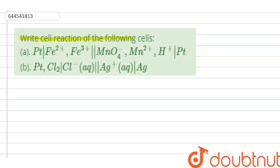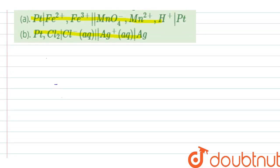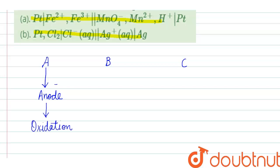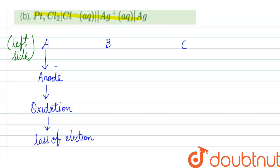Our first reaction and second reaction. First of all, students, a cell reaction has three parts: A, B, and C. A is for anode. Anode means oxidation. Oxidation means loss of electrons, and it is on the left side of our cell reaction.